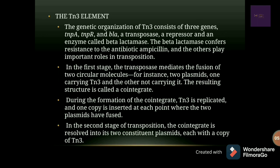The next example is the TN3 element. The genetic organization of TN3 elements consists of three structural genes: TNPA, TNPR, and PLA — encoding a transposase, a repressor, and an enzyme called beta-lactamase. The beta-lactamase confers resistance to the antibiotic ampicillin, while the other genes play an important role in transposition.